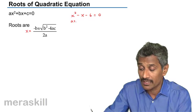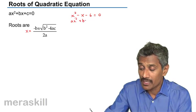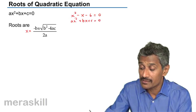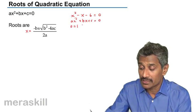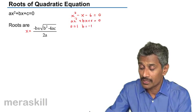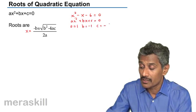Compare this with ax² + bx + c = 0. If you compare here, a = 1, b = -1, and c = -6.